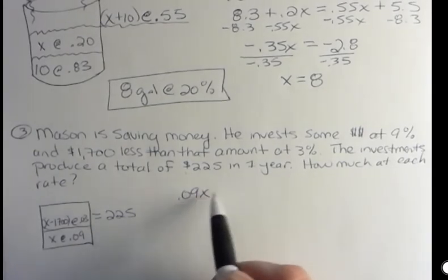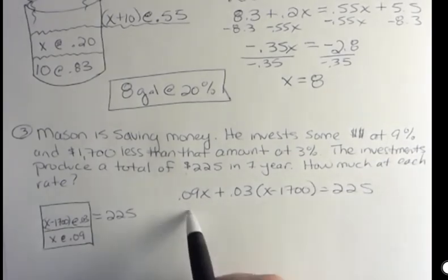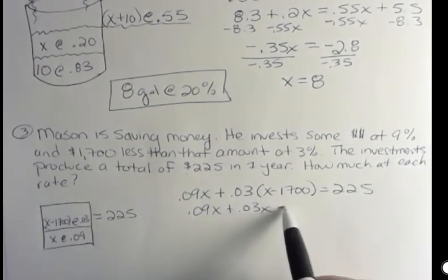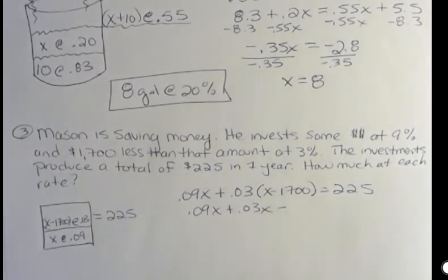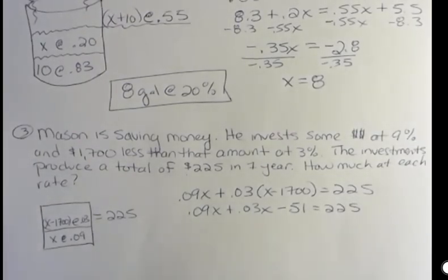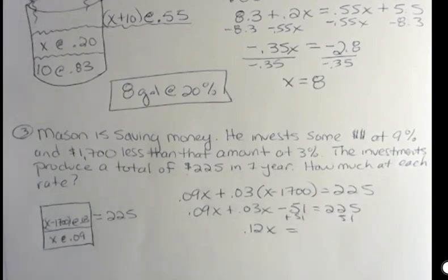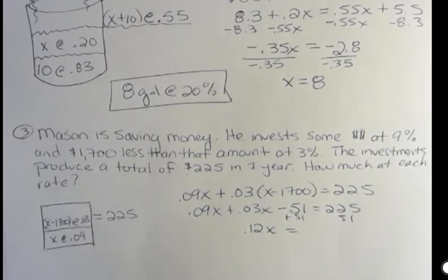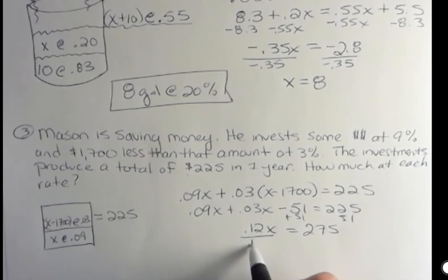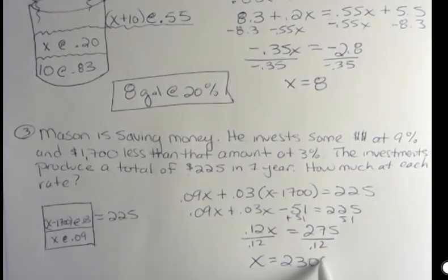That is 0.09x plus 0.03 times x minus 1,700 equals 225. 0.09x plus 0.03x minus 51 equals 225. 0.09 and 0.03 is 0.12. Adding 51 to both sides gives us 225 plus 51, 276. A lot of this I could do in my head. I hate to make a calculation error and throw everything off, so sometimes I just check myself. And then I'm dividing both sides by 0.12 and I get 2,300.